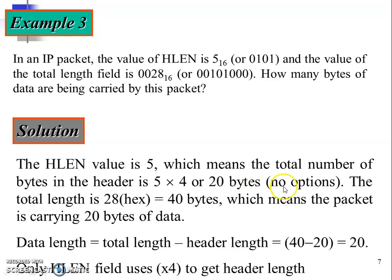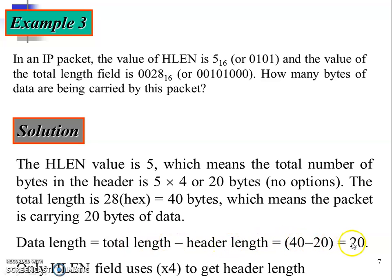They have asked about the data being carried by this packet. The total length given is 0028 in hexadecimal, which becomes 40 bytes. The packet is carrying 20 bytes of data: total length is 40 bytes, out of which 20 bytes are used for the header. Data length = total length − header length = 40 − 20 = 20 bytes. So 20 bytes of data are present in this packet.